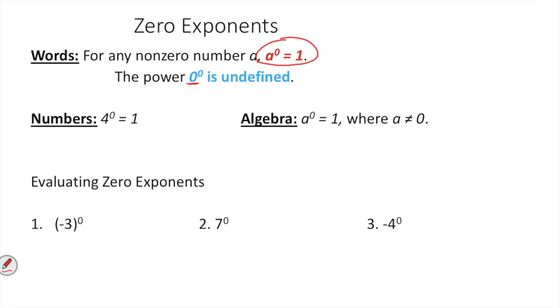Anything to the zero power, so negative three in the parentheses to the zero power right here, so negative three is inside the parentheses raised to the zero power, that would be a positive one. Here, seven to the zero, to the positive one.